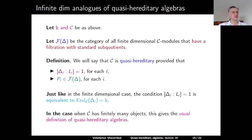We define the category F(Δ) as the category of all finite-dimensional C-modules that have a filtration with standard subquotients. We say that C is quasi-hereditary provided that each standard module Δ_i has exactly one composition factor isomorphic to L_i, and each projective module P_i belongs to F(Δ) — that is, it has a filtration with standard subquotients. In the case when C has finitely many objects, this gives exactly the usual definition of a quasi-hereditary algebra.